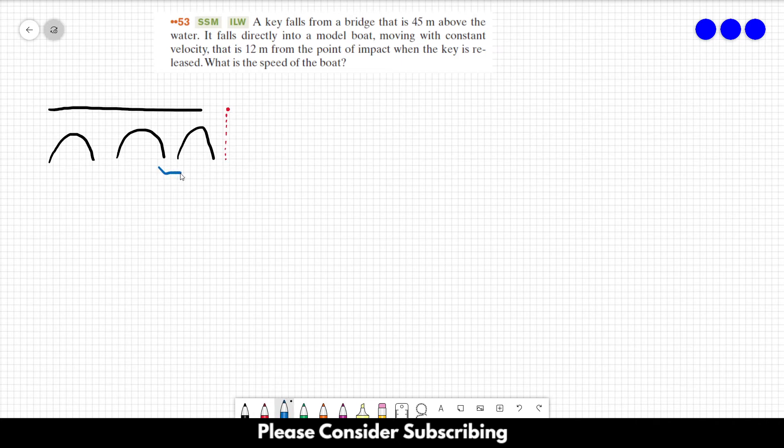boat over here. The boat travels 12 meters from when the key starts falling to when it hits the boat. So this is the boat over here, and we want to know the speed of the boat.